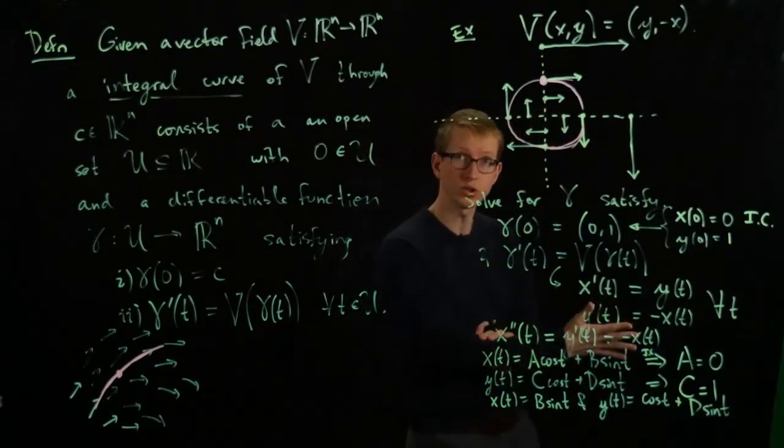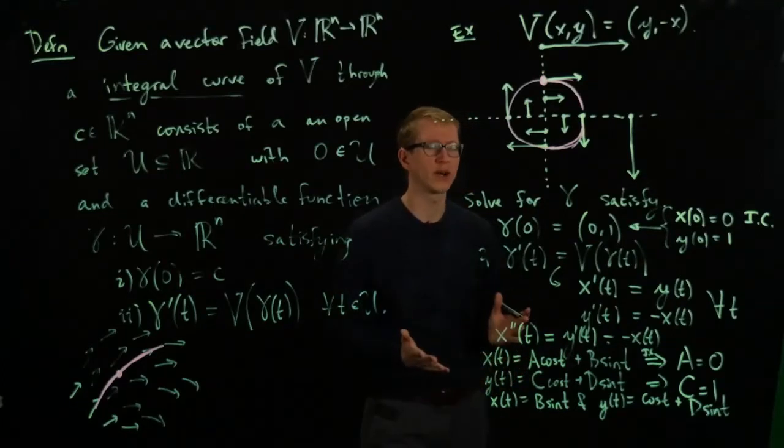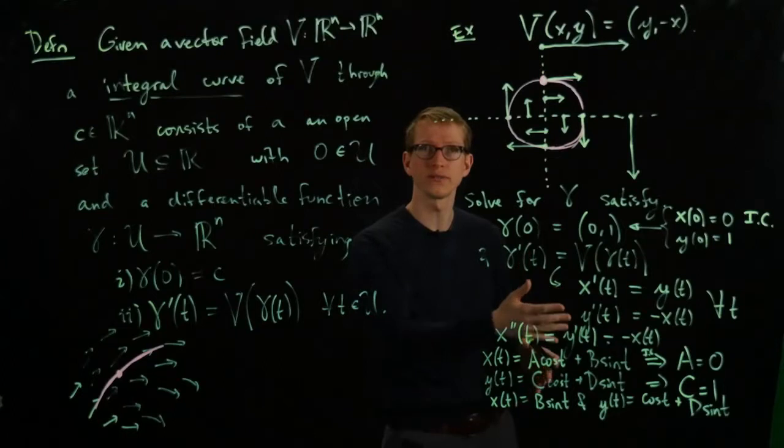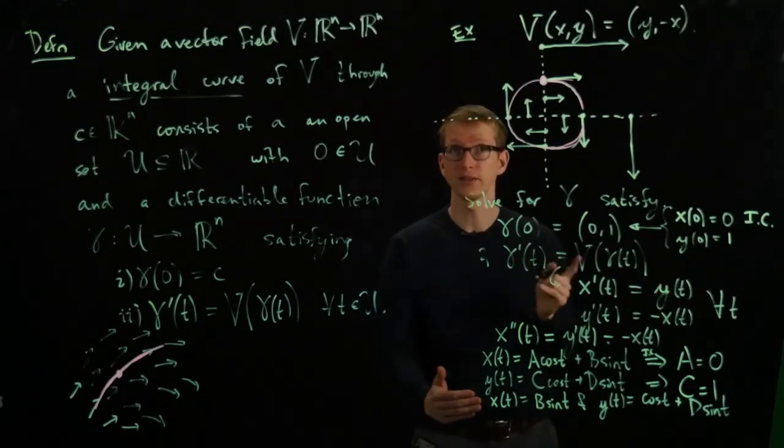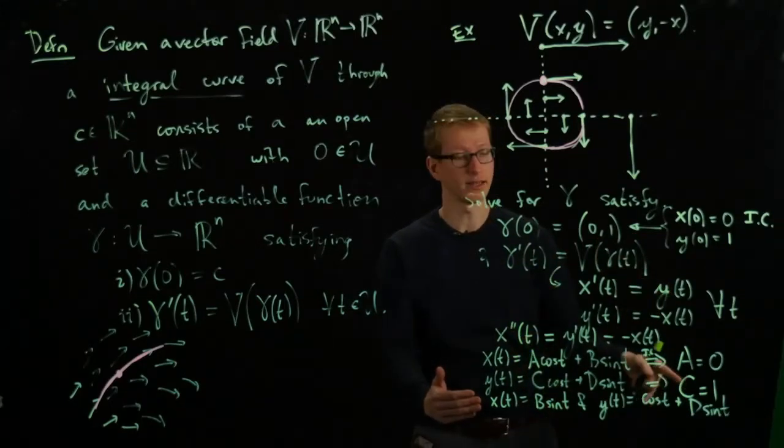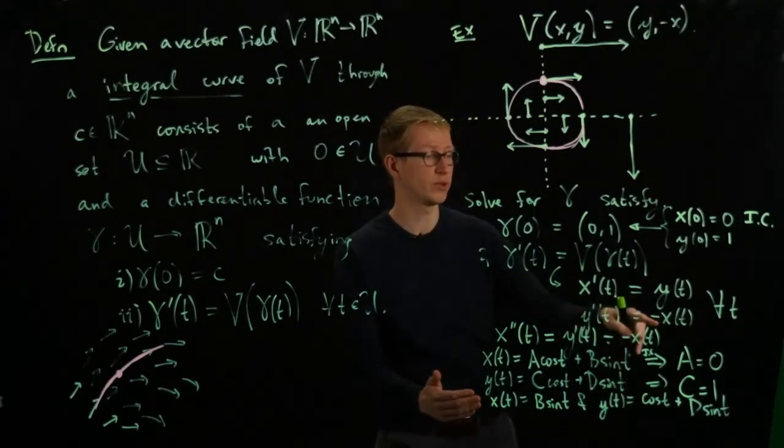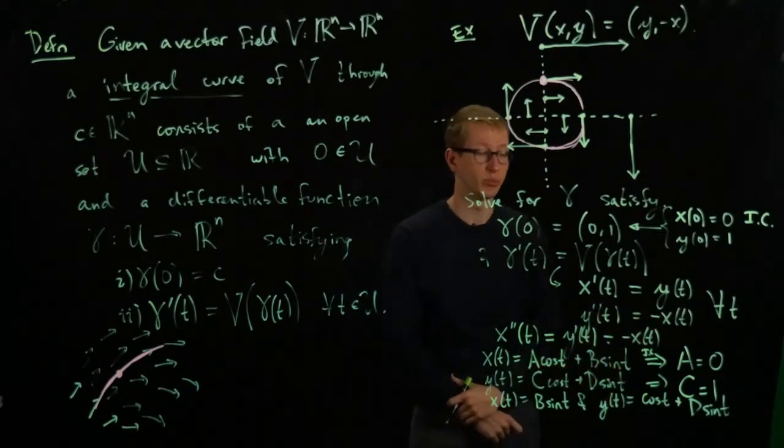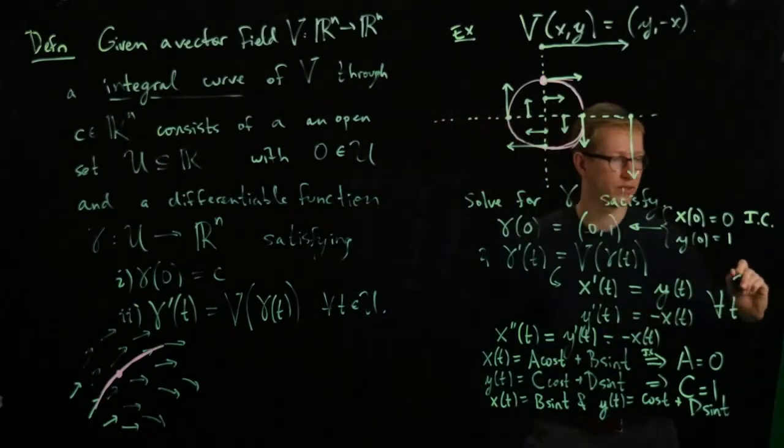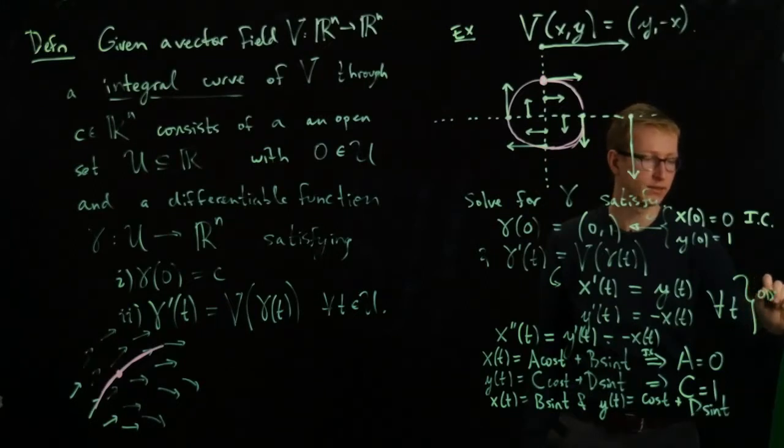So here we've used the two initial conditions, and we still have two unknowns left. How do we figure out what those unknowns are? Well, we still have these original differential equations. If we take the first derivative of x with respect to t, we should obtain y. That's going to give us a relationship between the coefficients b and d. And similarly, if we take the derivative of y, then we equate it to negative x, we'll get another equation that relates b and d together. So let's call these conditions, this is our actual ODE.